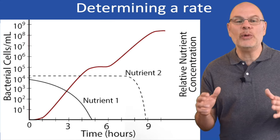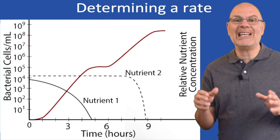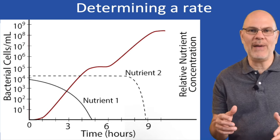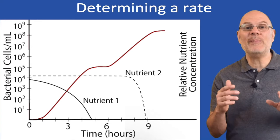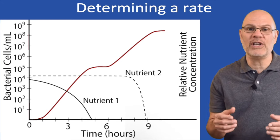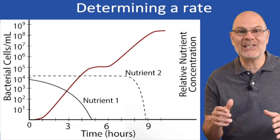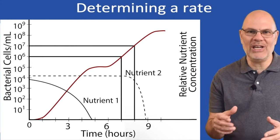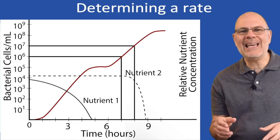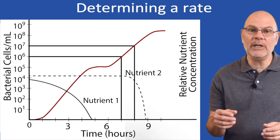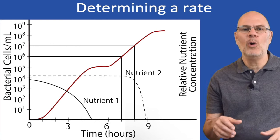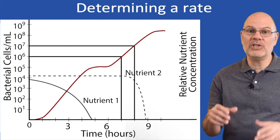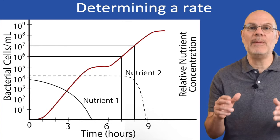Another aspect of dealing with data is doing calculations. A very common FRQ challenge is to calculate a rate of change. This graph shows bacterial population density in a culture of bacteria over several hours — the y-axis is population density and the x-axis is time. So what's the rate of growth between 7 and 8 hours? Rate is the change in the y-axis over the change in the x-axis — rise over run. At 7 hours, cell density is 10 to the 6th power, which is 1 million. At 8 hours, it's 10 to the 7th power, which is 10 million. 10 million minus 1 million is 9 million, and that difference occurred over 1 hour. So between hours 7 and 8, the rate of growth was 9 million cells per hour.